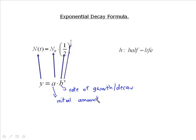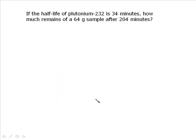So let's start a few. If the half-life of plutonium-232 is 34 minutes, how much remains of a 64 gram sample after 204 minutes? So here's our formula. N(t) = N₀(1/2)^(t/h). The one-half is built right into the formula. We will get N(t) equals the original amount, 64 grams, multiplied by one-half to the total time. Be careful because the total time is 204 minutes divided by the half-life of 34. If you're going to push this through your calculator, you'll need a bracket.